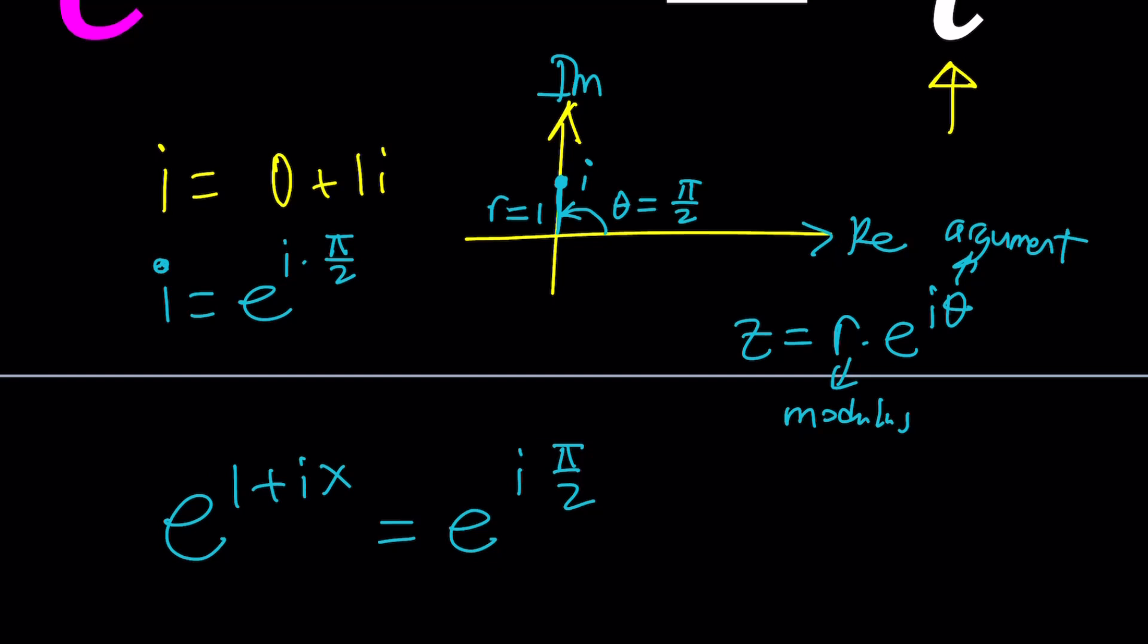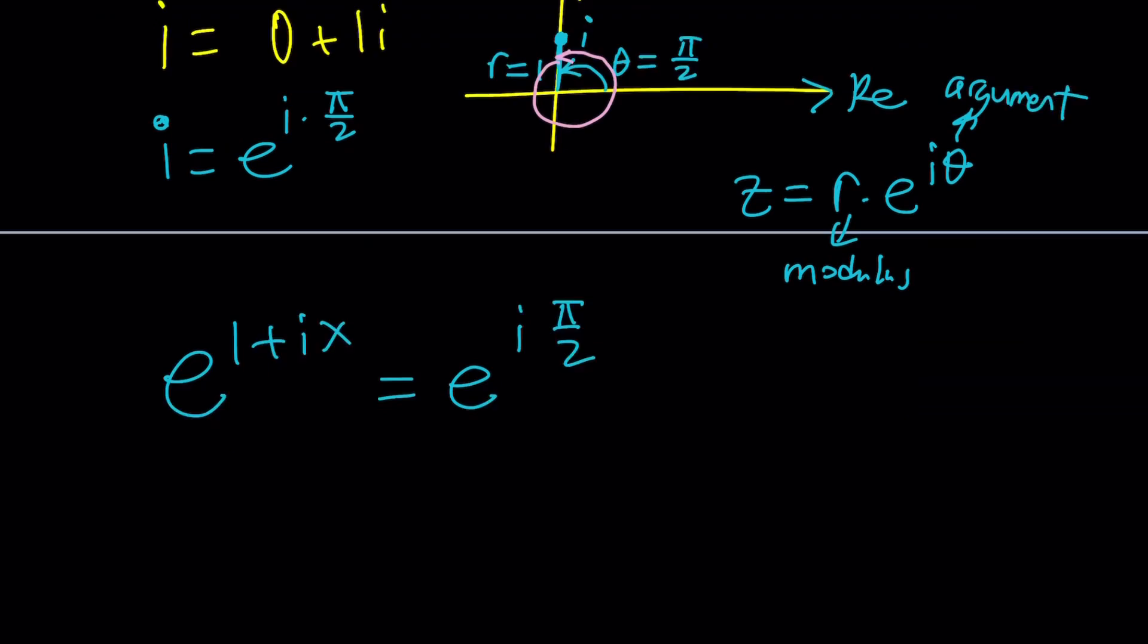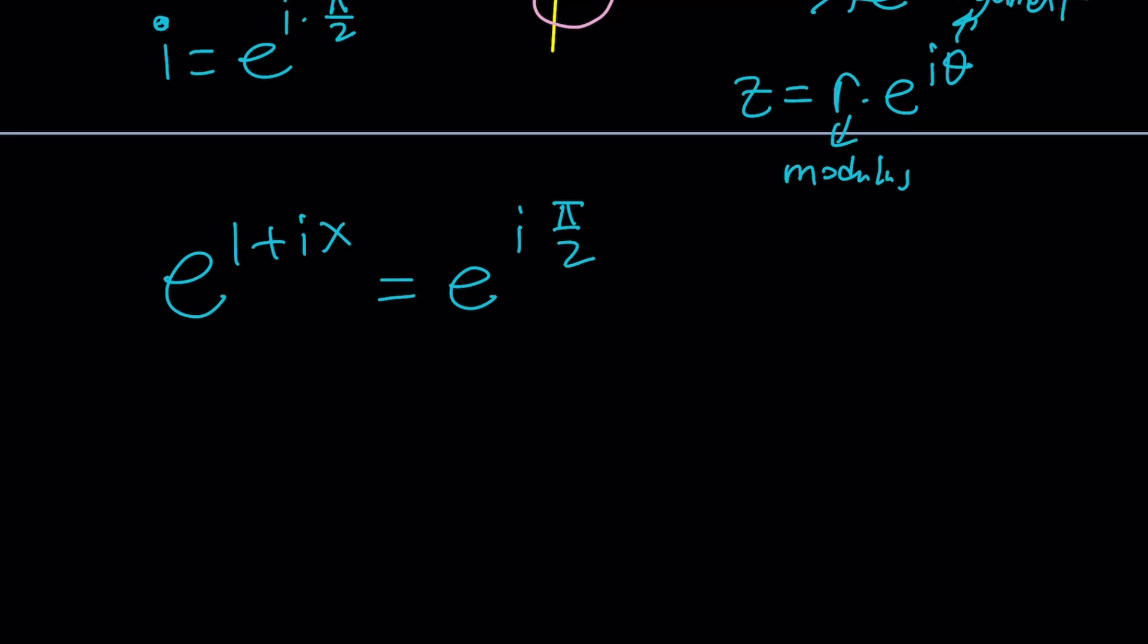So, we have pi over 2 as our argument, but we can add 2 pi to it, because adding 2 pi would basically bring us to the same point. We would just make an extra rotation, and you can keep doing it. You can even do it in the negative direction, which is the clockwise direction. So, instead of pi over 2, we can write this angle as 2 pi n, where n is an integer.